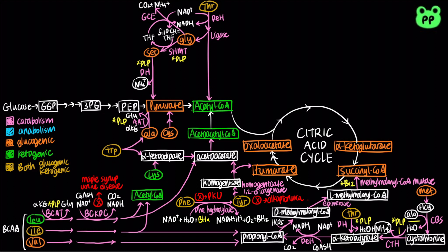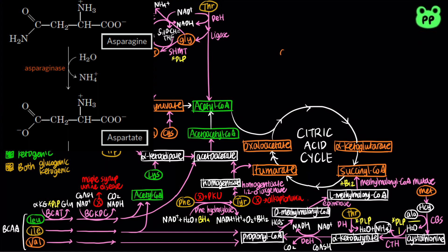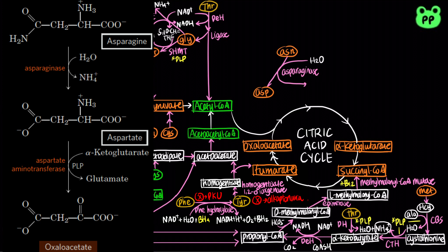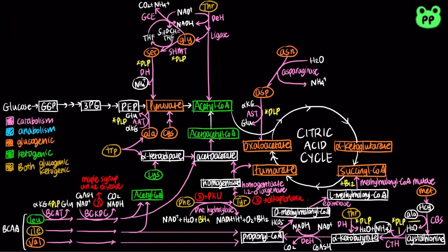Only two amino acids enter the citric acid cycle through oxaloacetate. The enzyme asparaginase catalyzes the hydrolysis of asparagine to aspartate, which undergoes transamination with alpha-ketoglutarate to produce glutamate and oxaloacetate, by aspartate aminotransferase, abbreviated as AST. The transamination reaction once again requires the cofactor PLP.